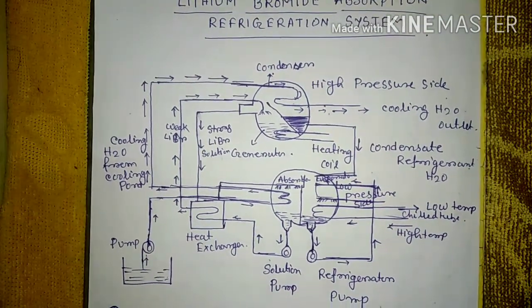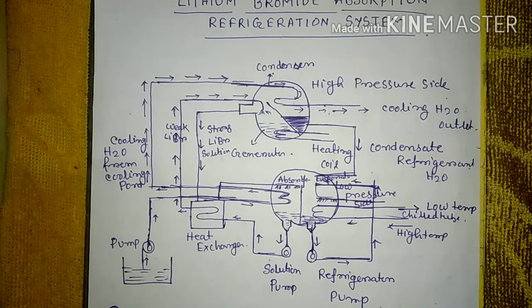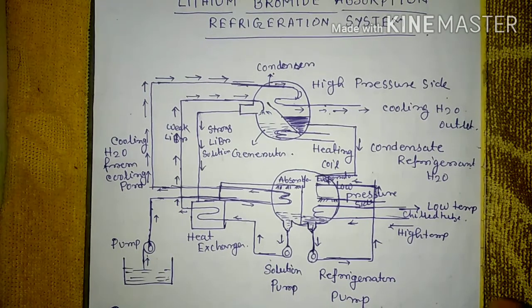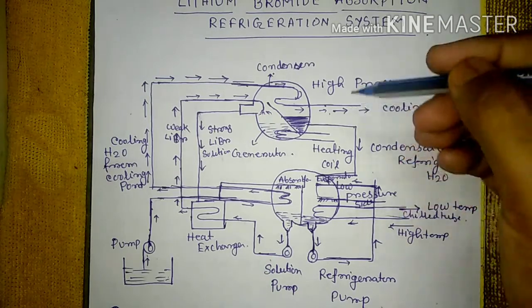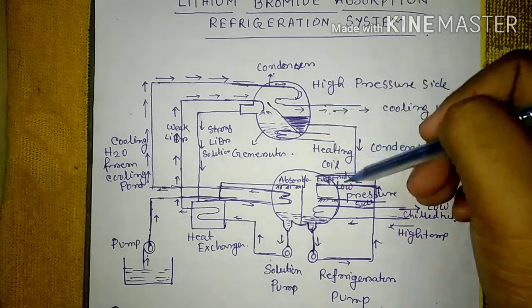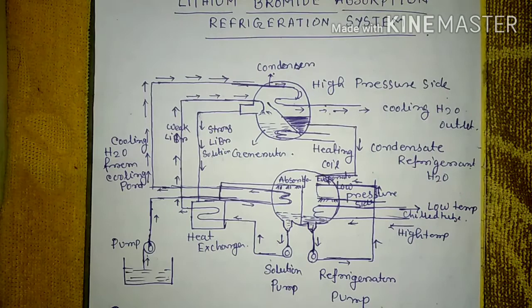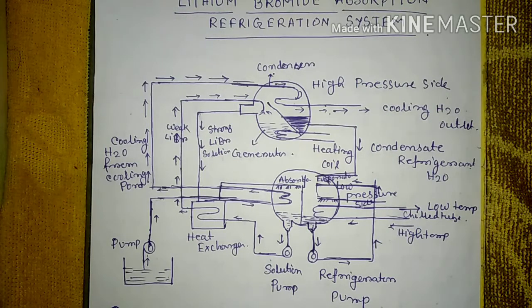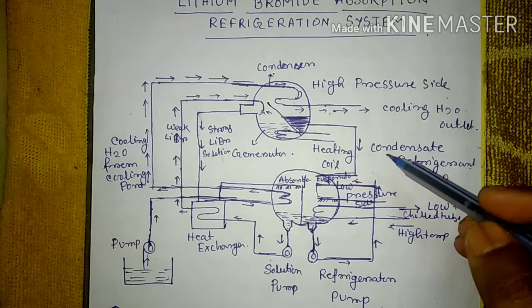This is the block diagram of the system. You can observe all the components here. There are two cylindrical cells in this system.